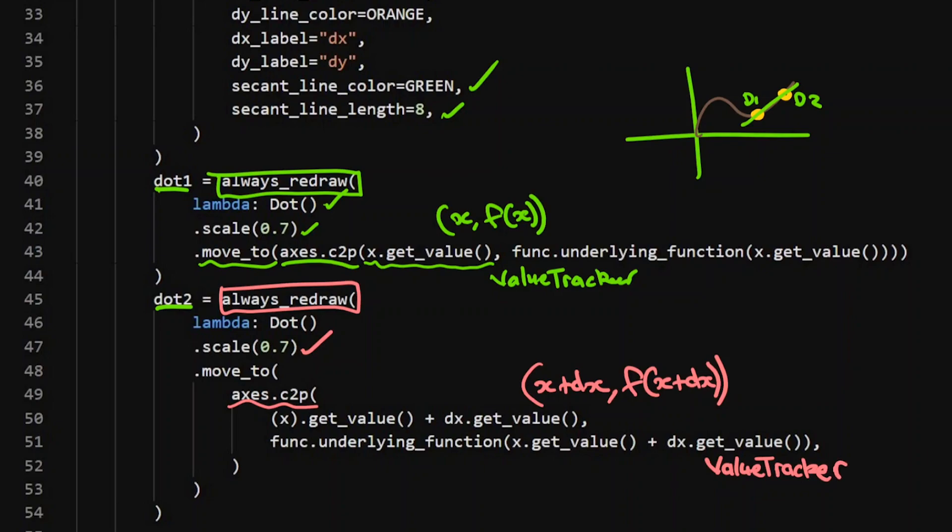And again, this is based on the value tracker of dx. So this is the dx value tracker there. And this one here, that's the x value tracker. So this second dot is dependent on the two value trackers. Again, this just so I can get a nice little animation going there. That's all the objects added to my screen.